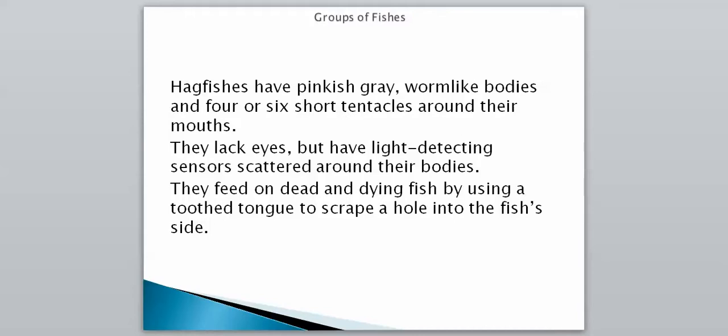Hagfish have pinkish-gray worm-like bodies and four to six short tentacles around their mouths, similar to a catfish's whiskers. They lack eyes but have light-detecting sensors scattered along their bodies. They feed on dead and dying fish by using a toothed tongue to scrape a hole into the fish's side. They also produce a nasty slime. Unlike lampreys, hagfish are not actually parasites — they mainly eat dead things.